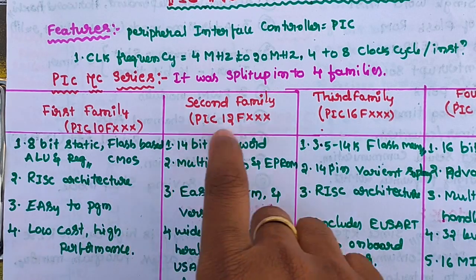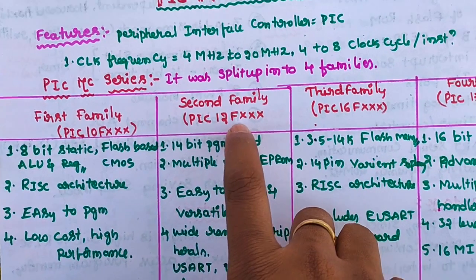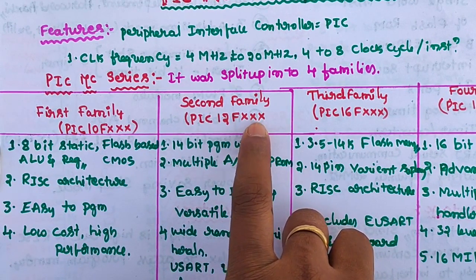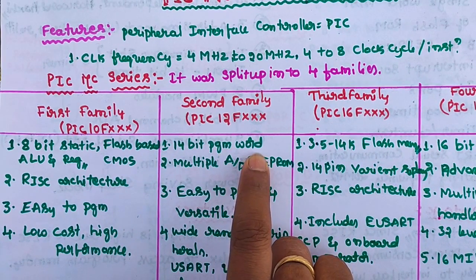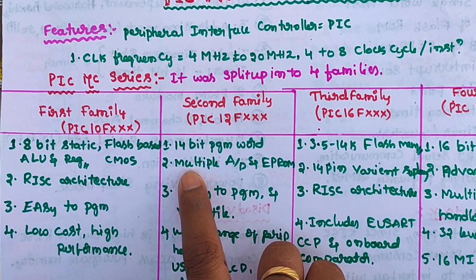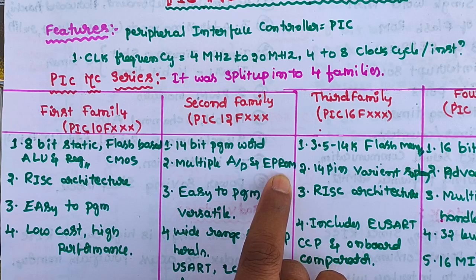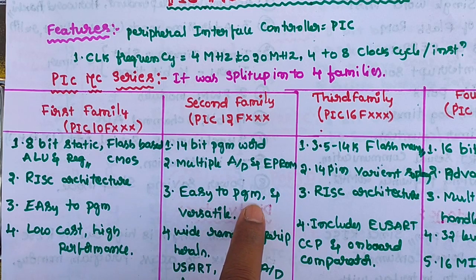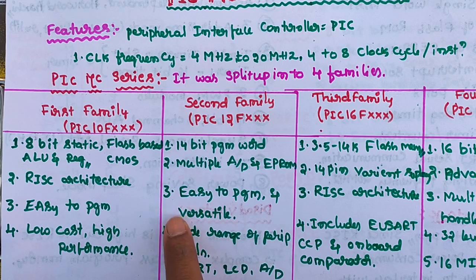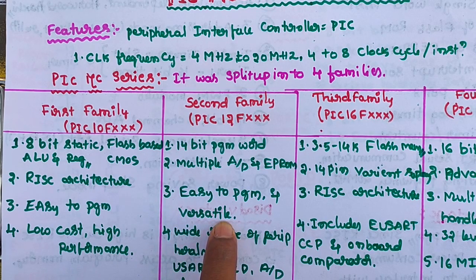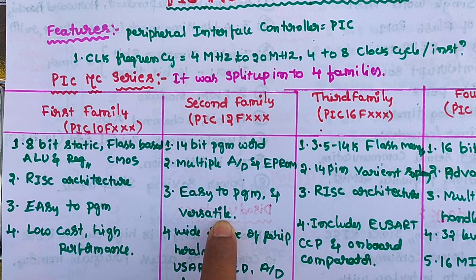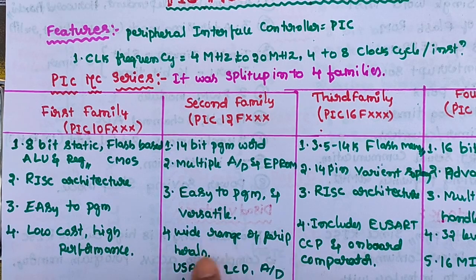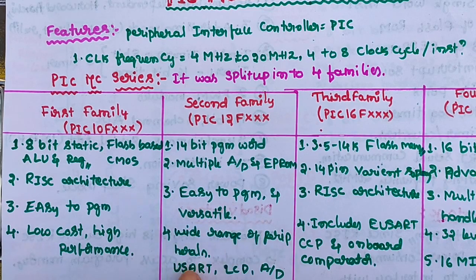The second family is PIC 12F XXX. It has a 14-bit program word and features multiple analog-to-digital and EPROM capabilities, making it easy to program. It is also a RISC-based microcontroller and is versatile — meaning it can be applied to a wide range of applications in embedded systems with a wide range of peripheral interfaces.